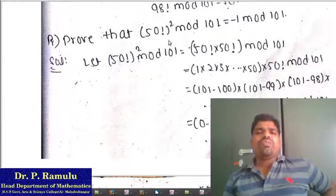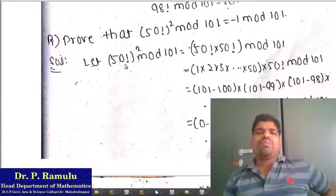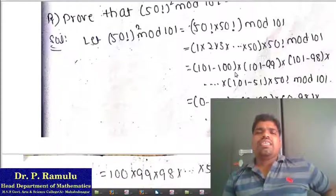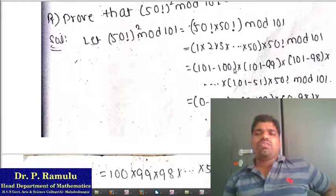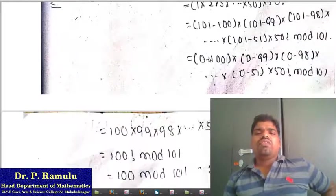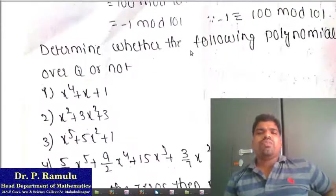Homework: Prove that 50!² mod 101 = −1 mod 101. You can apply this by writing 50! × 50! mod 101 as 1 × 2 × 3 × ... × 50 into 101 − 100, and 101 − 99, and so on, applying Wilson's theorem to get the result −1 mod 101.